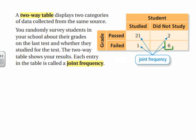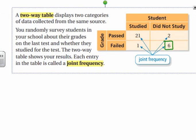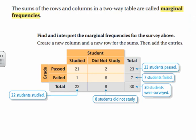For example, we have six students who didn't study and those six students failed. You could use a different joint frequency and look at 21 students who studied and those 21 students passed.